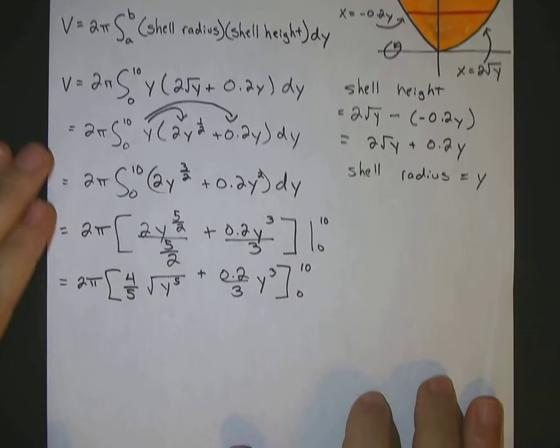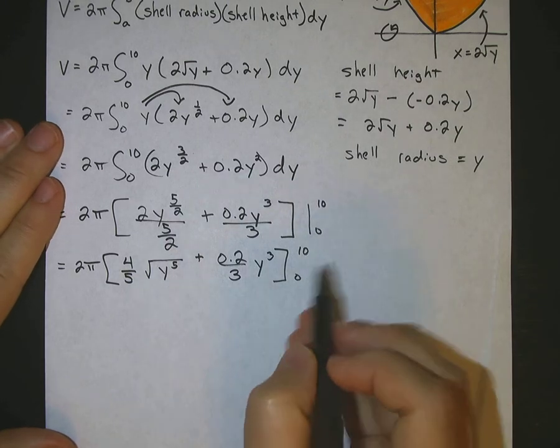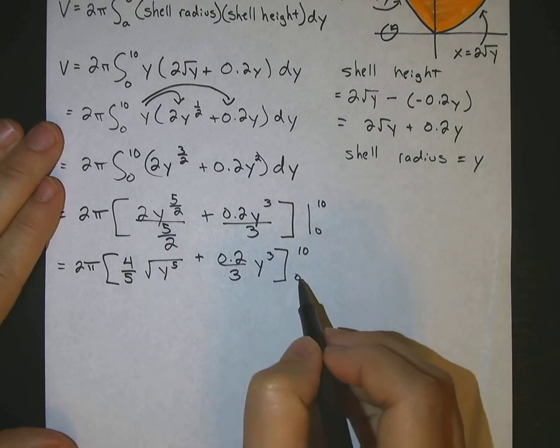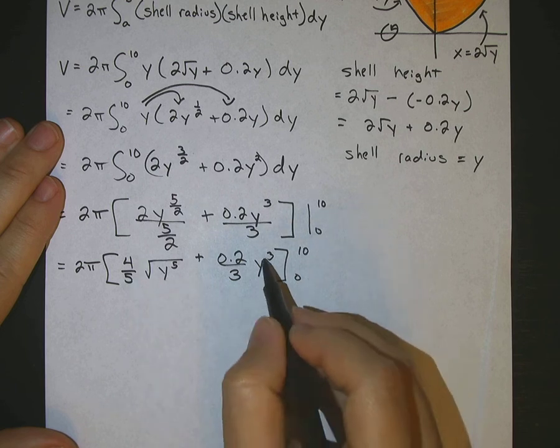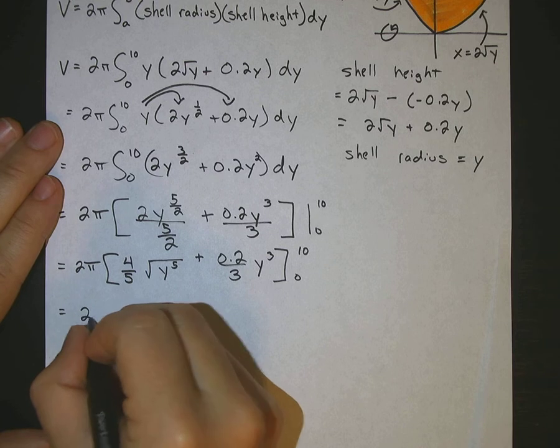Okay. Let's go ahead and input our limits there. You notice if you input the 0, the bottom limit, nothing really happens because everything zeroes out, so I'm not going to bother with it. I'll just do the upper limit. So it's 2 pi.